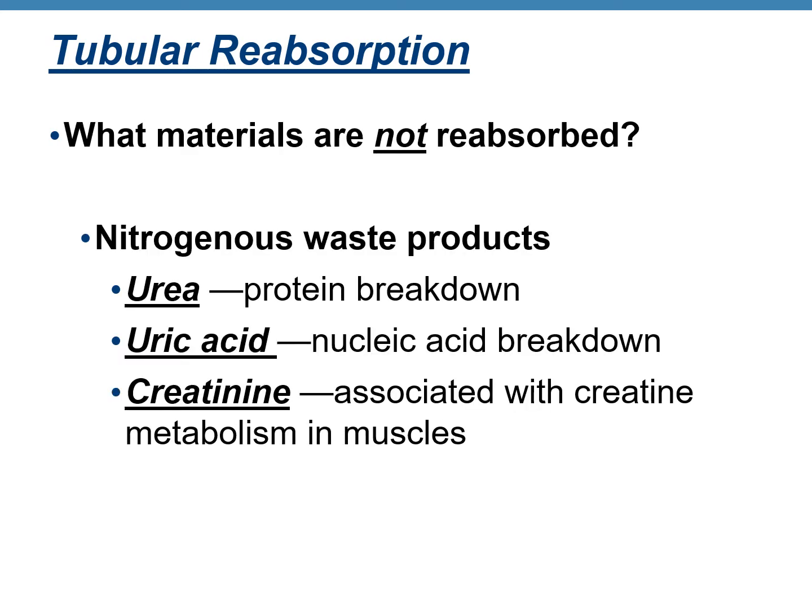What are the materials that do not get absorbed? Usually the nitrogenous or toxic waste products of the body. There are three main nitrogenous waste products. The first is urea, which is an end product of protein metabolism. The second is uric acid, which is an end product of nucleic acid metabolism. And the third is creatinine, which is associated with creatine metabolism in muscles.